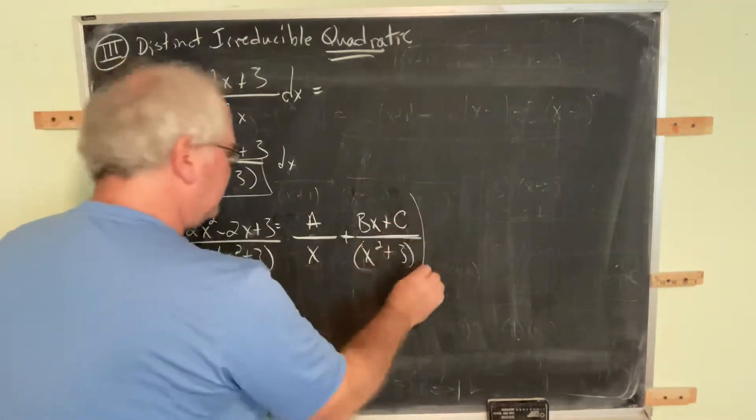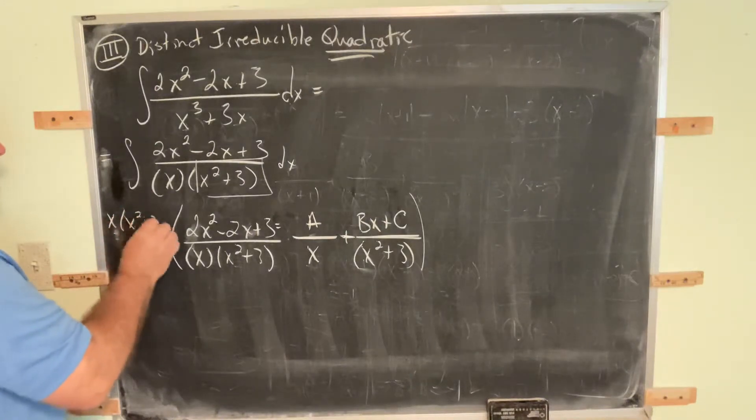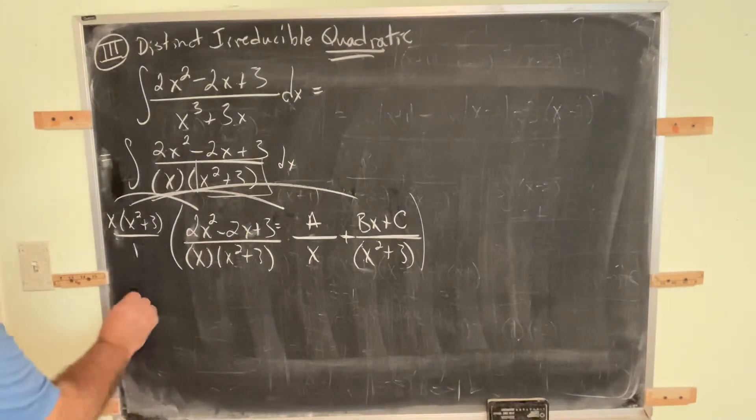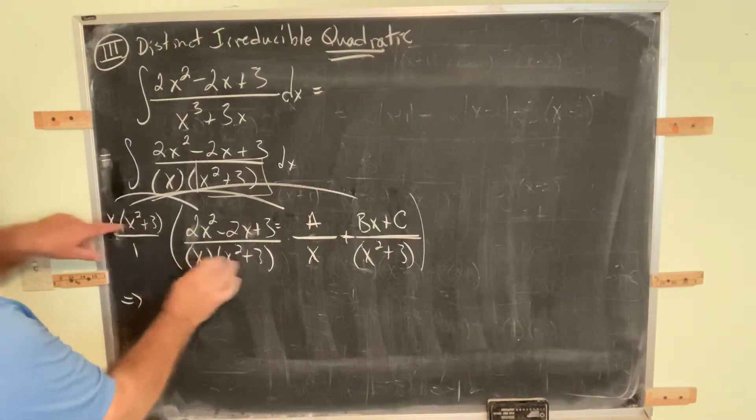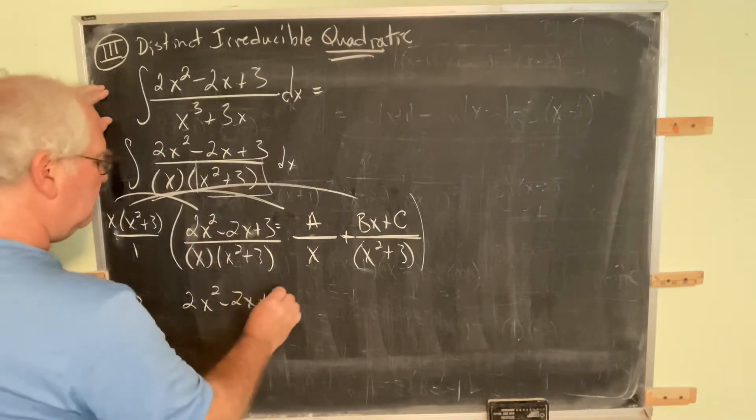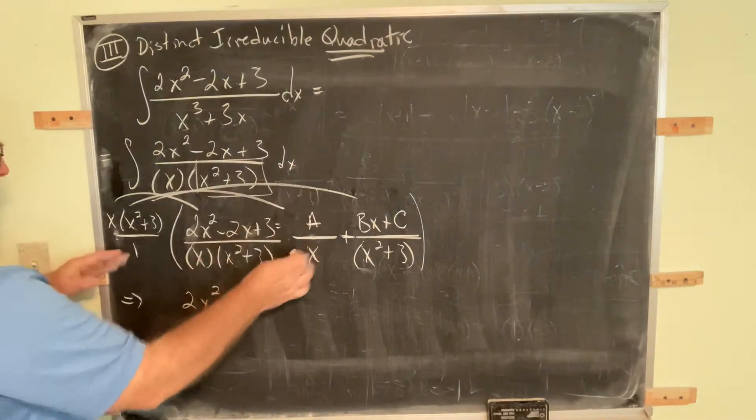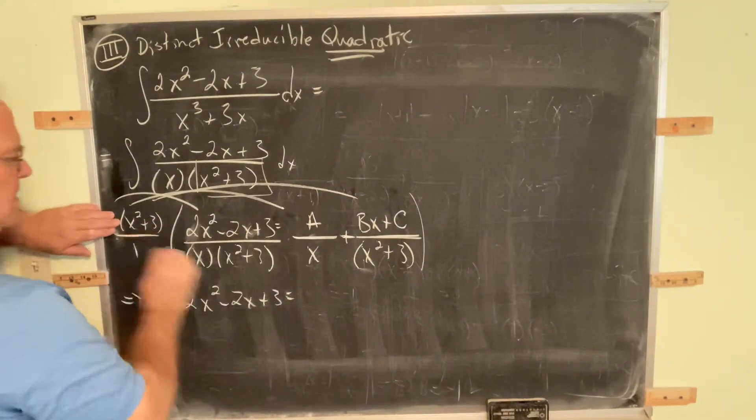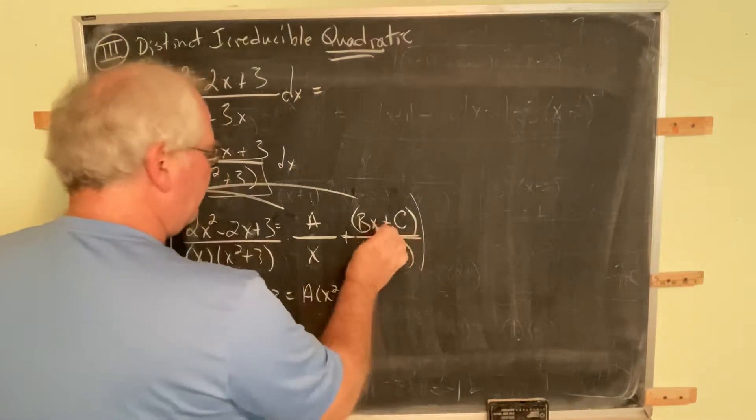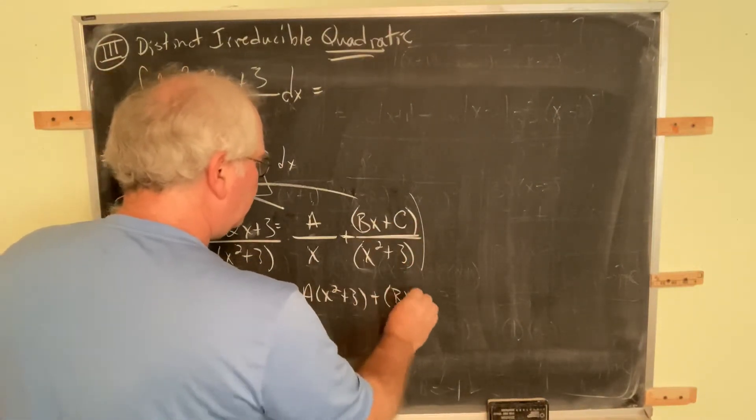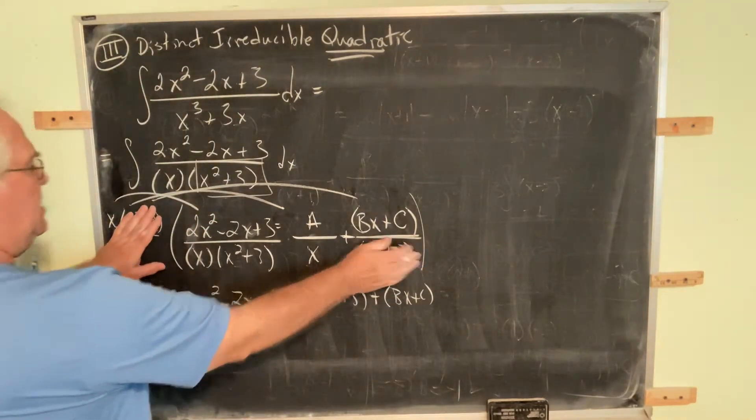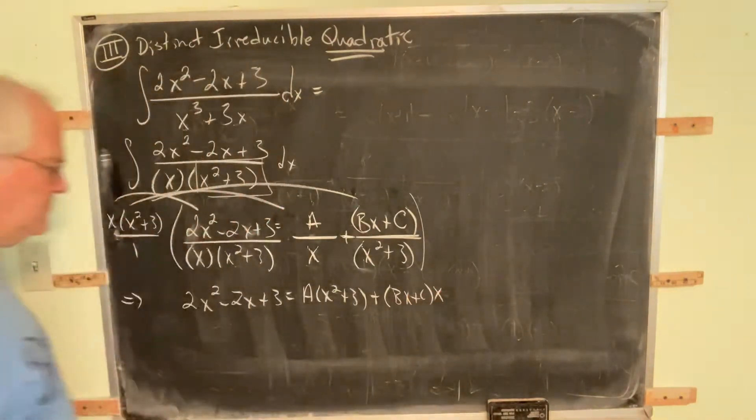Now the procedure next step is very similar. Multiply through by this common denominator here, here, here, and here. On the left-hand side, the same thing always happens. If both of these cancel with both of these, the left-hand side, you're always left with just the numerator. On the right-hand side, when you multiply by this first term, the x cancels with the x, but the x squared plus 3 remains. When you multiply by this last piece, be sure to put binomials in parentheses. When you multiply here, the x squared plus 3 cancels, but you still have this x factor.